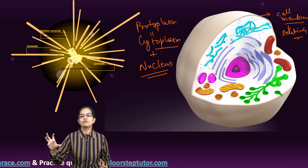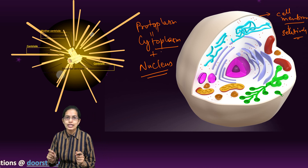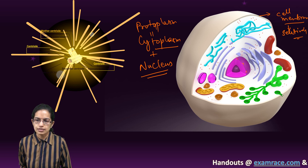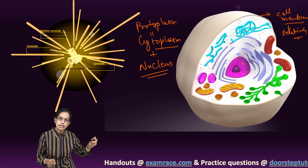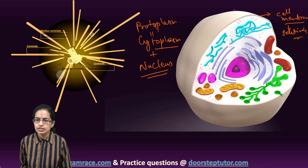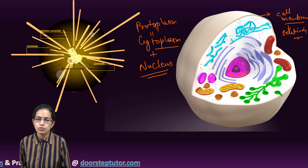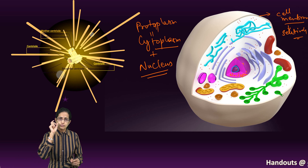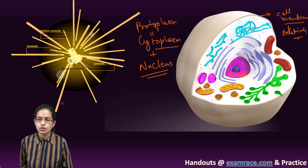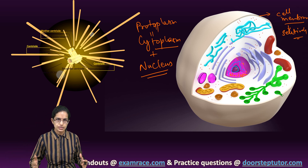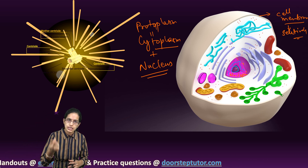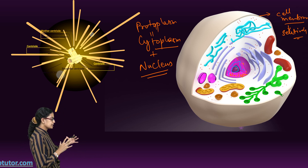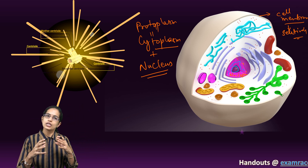Then you have the nucleus. Nucleus is a double membrane structure and it has small pores that are present. The membrane is known as nuclear membrane. You have nuclear pores on the surface, and within it you have the fluid material which is known as nucleoplasm. Within the nucleoplasm, you have the nucleoli, and surrounding the nucleoli you have the chromatin network — thread-like structures that carry genes responsible for genetic information passed from one generation to another. In certain cases, chromatin thickens to form chromosomes.